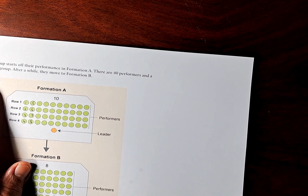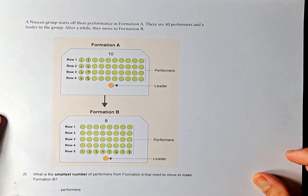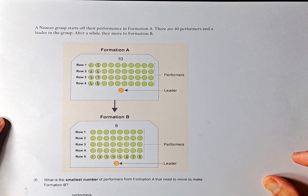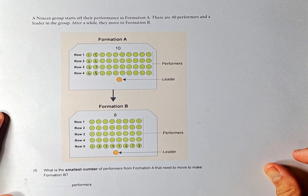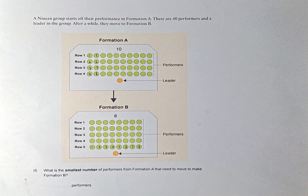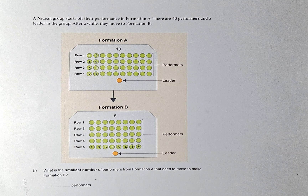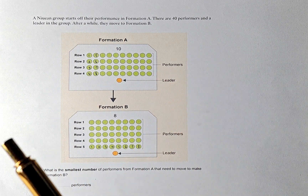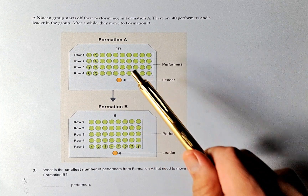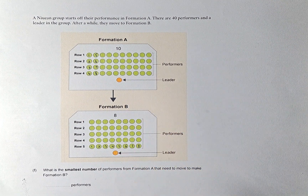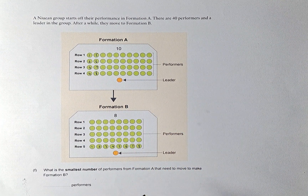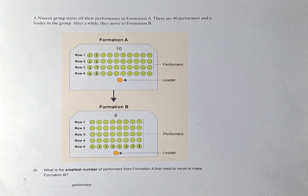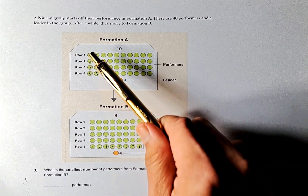Now we are going to do the last question, which is 4F. A wing group starts their performance in formation A. There are 40 performers and a leader in the group. After a while, they move from formation A to formation B. The question is: what is the smallest number of performers from formation A that need to move to make formation B?